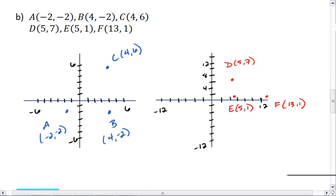So once we have our points plotted, notice on my left graph I used a scale of 1 unit, while on my right I used a scale of 2 units, so they appear to be slightly different sizes. But once I have the points plotted, I can draw my triangles.